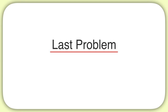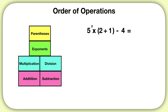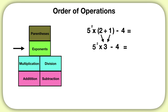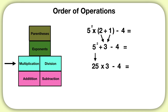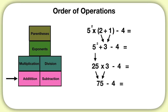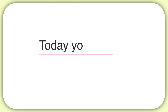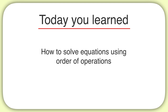Now here's your last problem for this video. What is the solution to this equation? First you should have solved parentheses — two plus one is three. Then you see an exponent: five to the power of two. You should have solved that to get twenty-five. Bring down the rest of your equation. Next you would multiply: twenty-five times three is seventy-five. And the final step is to subtract: seventy-five minus four gives you a final answer of seventy-one. Today you learned how to solve equations using the order of operations.